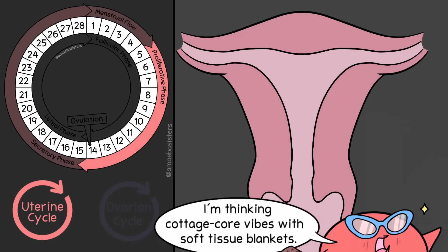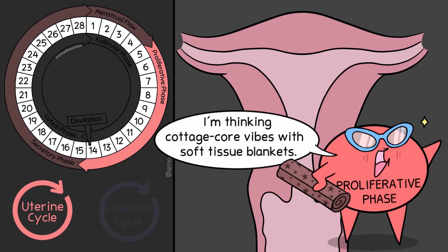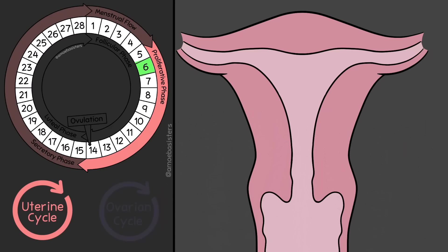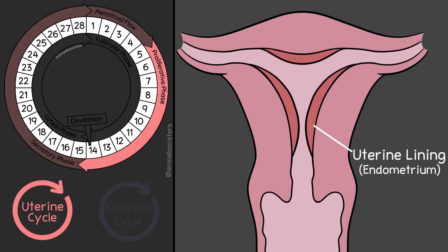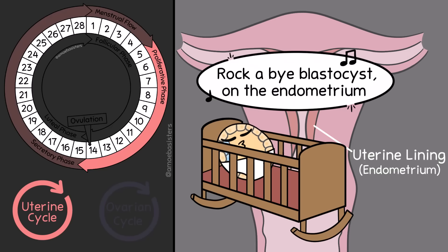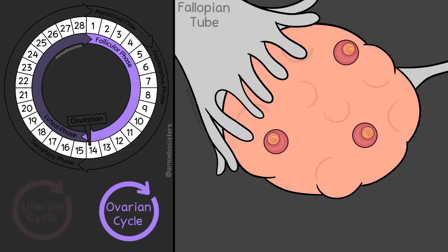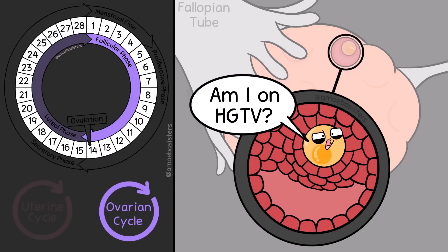Let's return to the uterus as we look at the next uterine cycle phase, the proliferative phase. Around day five, six, or seven — remember the days are approximate — the uterine lining, or endometrium, starts to regrow. This is a big deal because eventually it will need to be rich with blood vessels so that it could have the ability to nourish a blastocyst someday. A blastocyst is a fertilized egg that has done several divisions. Meanwhile, in the ovarian cycle, we're still in the follicular phase, but around day five the follicles have been growing more, and as they do, they will eventually start to approach the surface of the ovaries.